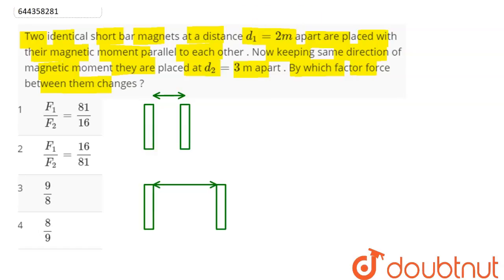This separation is 2 meters and this separation is 3 meters. Initially, both magnetic moments were parallel to each other, and keeping the same direction, the distance is increased. Initially, with magnetic moments M and M, the distance d₁ is given as 2 meters.